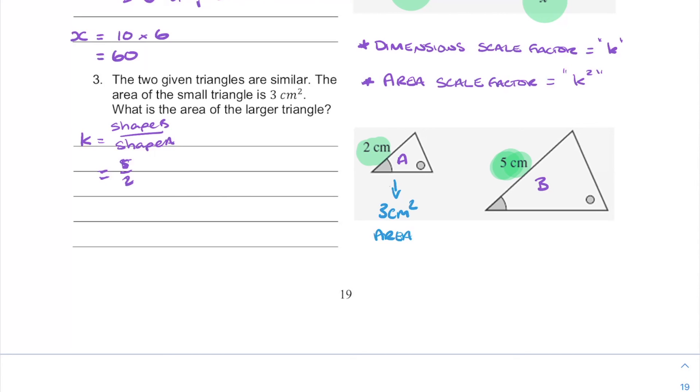So when we set up our area problem, our area of shape b, we're going to take the area of shape a, which is 3 centimeters squared, and we're going to multiply that by k squared. So in this case, it's going to be 5 over 2 all squared. The reason I put it in brackets is so that you know you need to square both parts of our fraction, not just the top bit, not just the bottom bit, but both bits. And for this, we can just go straight into our calculators. We're going to have 18.75 centimeters squared.